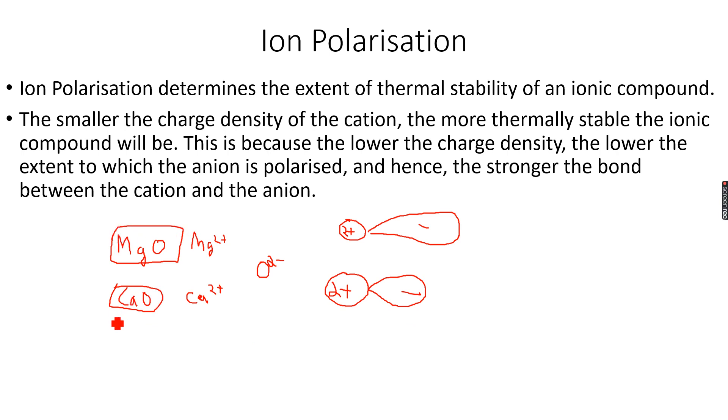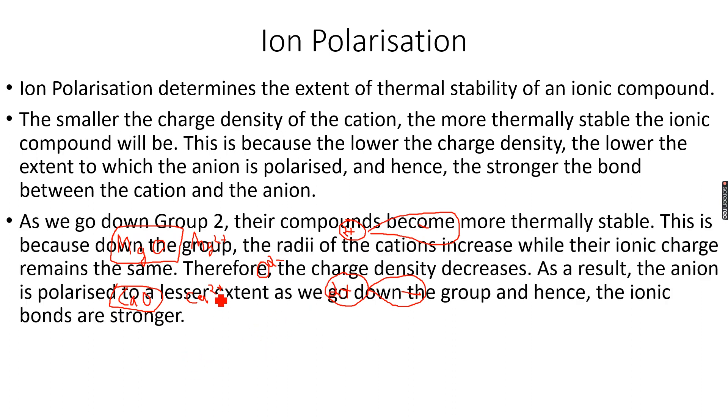What we mean by this is that CaO will decompose at a greater temperature compared to MgO. Therefore, we can deduce the extent of thermal stability. Since the Ca2+ ion has lower charge density, it will polarize the anion less than the Mg2+ ion.